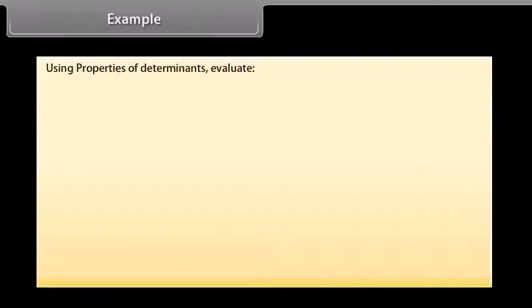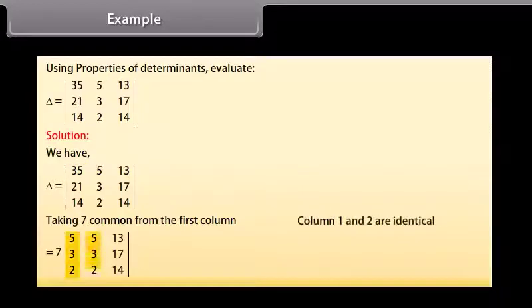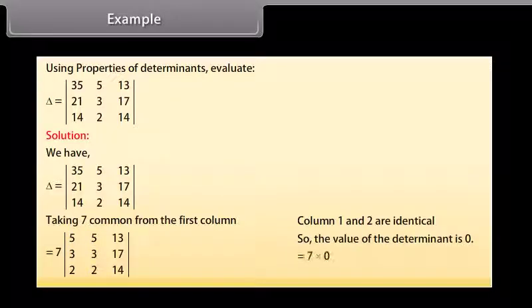Example: Using properties of determinants, evaluate the determinant. Solution: By taking 7 common from the first column, columns 1 and 2 become identical, so the value of the determinant is 0; that is, 7 × 0 = 0.